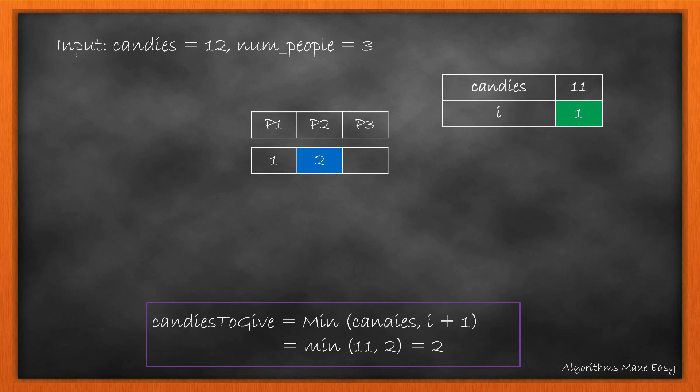As we move ahead, i becomes 1. The number of candies we can give person 2 is the minimum of 11 and 2, which is 2. So person 2 now has 2 candies, and 9 candies remain.